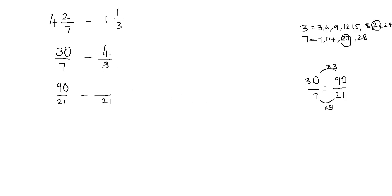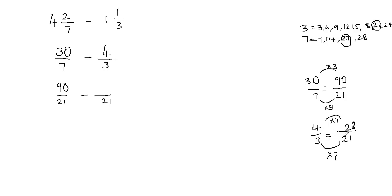Now I'm going to make an equivalent fraction to 4 thirds. I want my denominator to be 21. What do I multiply by 3 to make it 21? I can multiply my denominator by 7, and I also have to multiply my numerator by 7 to keep the fraction balanced. 4 times 7 gives me 28, so I get 28 over 21. Since 4 thirds equals 28 over 21, I can replace 4 thirds with 28 over 21.